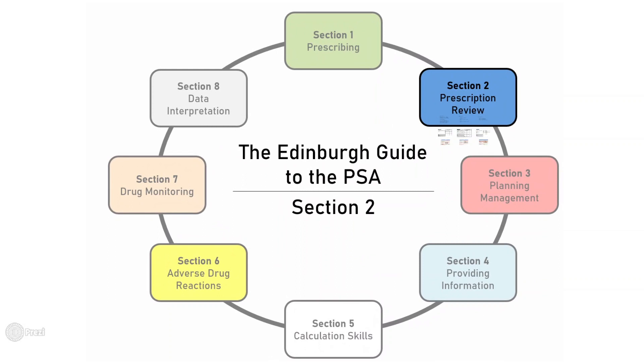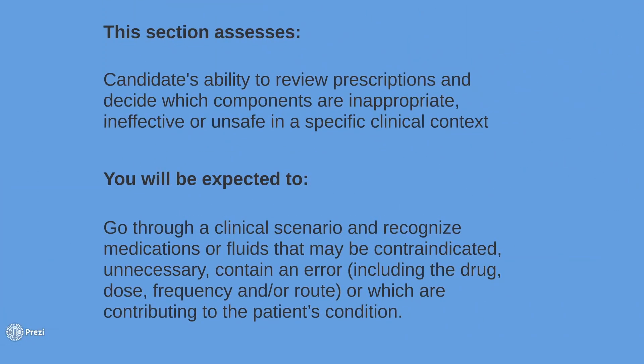Hello and welcome to the second video of the Edinburgh Guide to the PSA. This video will focus on Section 2: Prescription Review. As a brief overview, this section assesses your ability to review a patient's current prescriptions and decide which components are inappropriate, ineffective, or unsafe in a specific clinical context. Information regarding the clinical situation will be detailed in the patient history, examination, and investigations.